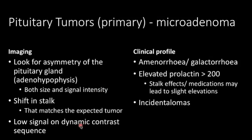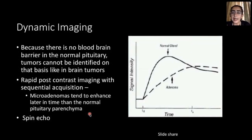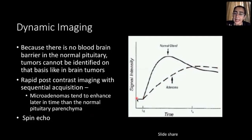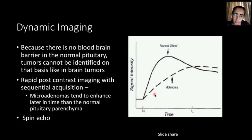The dynamic post-contrast sequence is very important when evaluating for a pituitary microadenoma. The pituitary gland lacks a blood-brain barrier, so it enhances brilliantly after contrast injection. A microadenoma less than 1 cm in height may be missed on a routine delayed post-contrast scan. In the early enhancement phase, the normal pituitary enhances immediately while the adenoma enhances later, allowing detection of the delayed-enhancing adenoma on dynamic imaging that would be missed once the entire gland enhances uniformly.